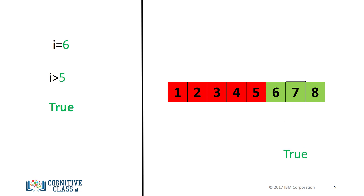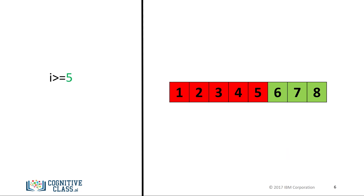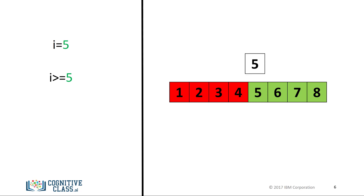We can also apply the same operations to floats. If we modify the operator such that the left operand i is greater than or equal to the value of the right operand — in this case 5 — then the condition becomes true. In this case, we include the value of 5 in the number line, and the color changes to green accordingly. If we set the value of i equal to 5, the operand will produce a true.